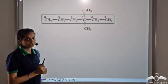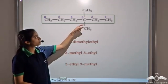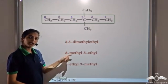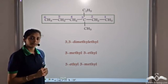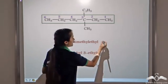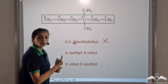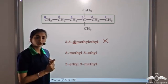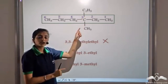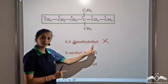Now how should we name the substituents? Should it be 3,3-dimethylethyl because both substituents are present at the 3rd position? Should it be 3-methyl-3-ethyl or 3-ethyl-3-methyl? We cannot have 3,3-dimethylethyl because 'di' is used only when we have the same substituent present twice. Here we have two different substituents, so we cannot use 'di' as the prefix. So the first name cannot be used.